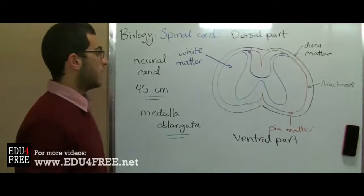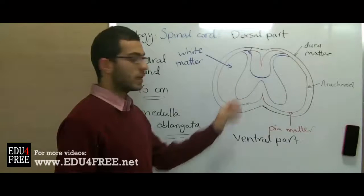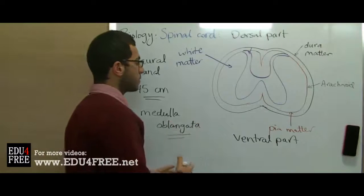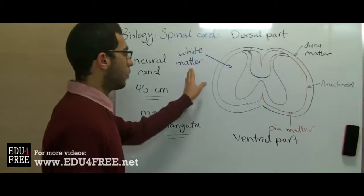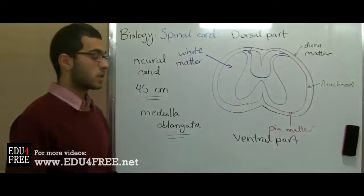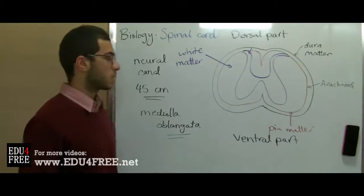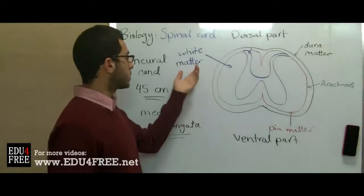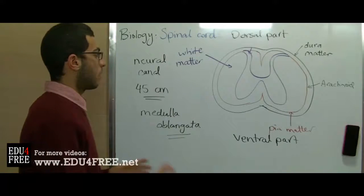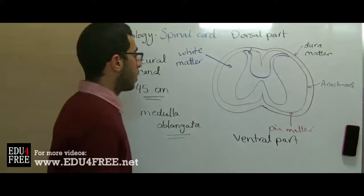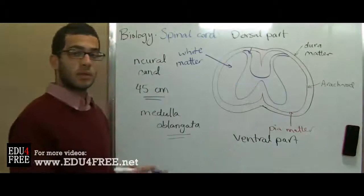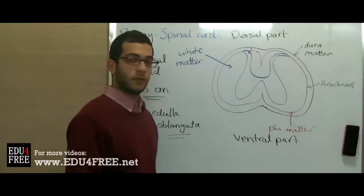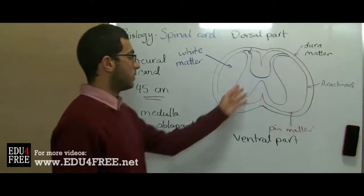The function of the spinal cord is to transmit the nerve impulses to and from the brain. The part responsible for this is the white matter, which consists of nerve fibers — the axons of neurons — which are responsible for the transmission of nerve impulses. The gray matter is the main part responsible for reflex actions, because it consists of thousands of nerve cells.